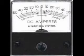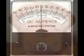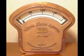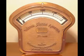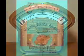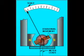Some meter movements have a needle that is spring centered in the middle of the scale sweep, instead of to the left, thus enabling measurement of either polarity. Common polarity sensitive movements include the Weston and D'Arsonval designs, both PMMC type instruments.